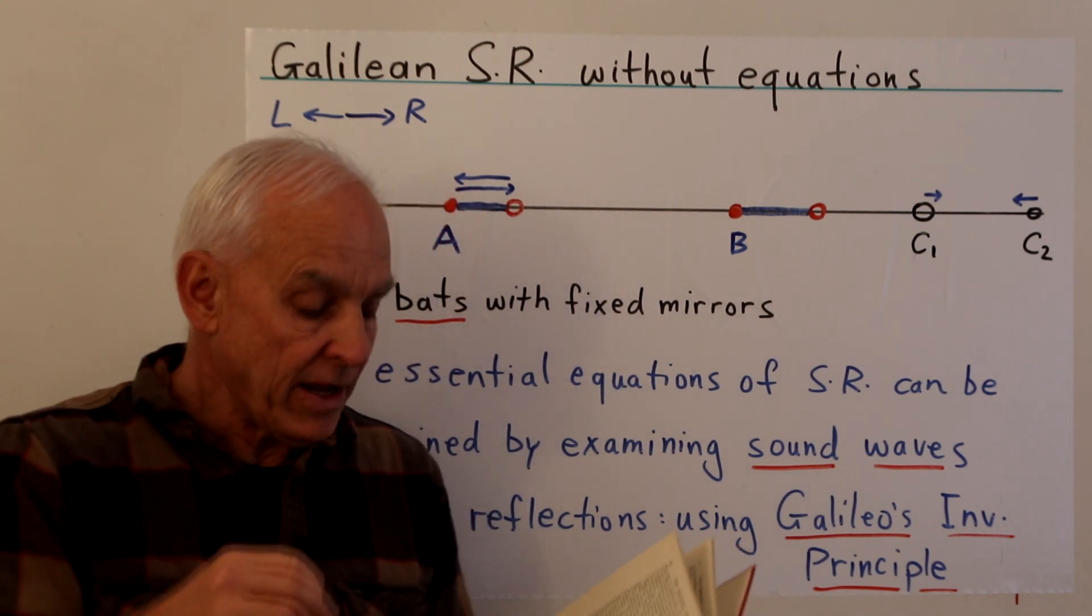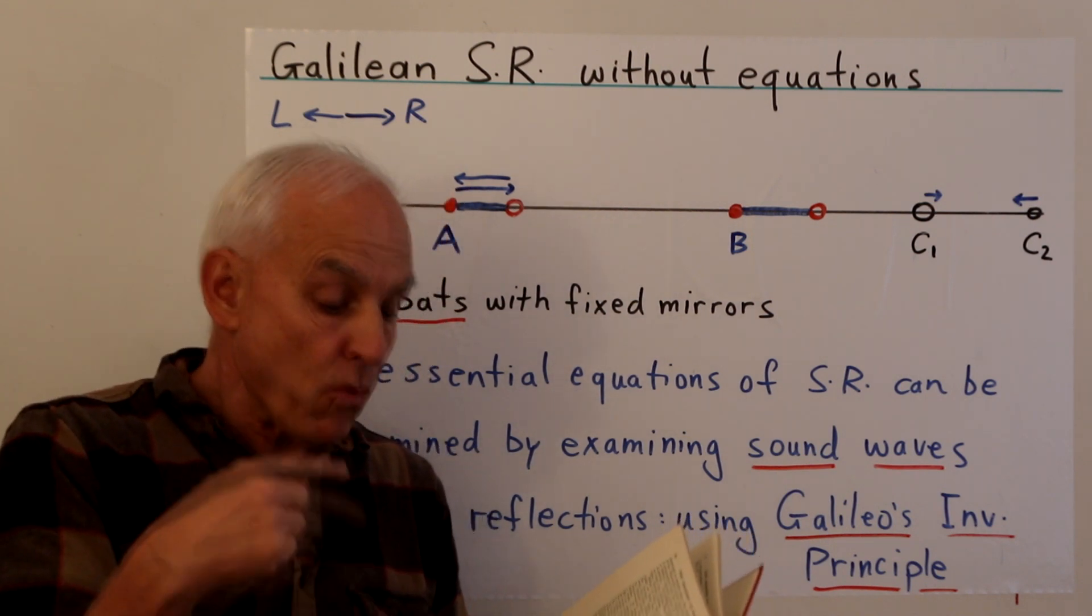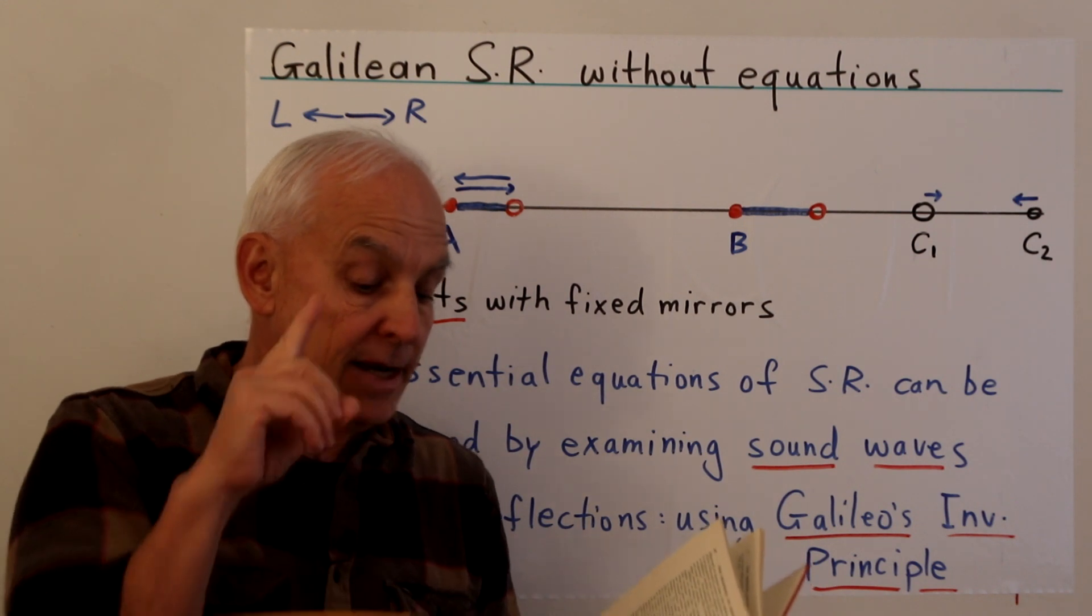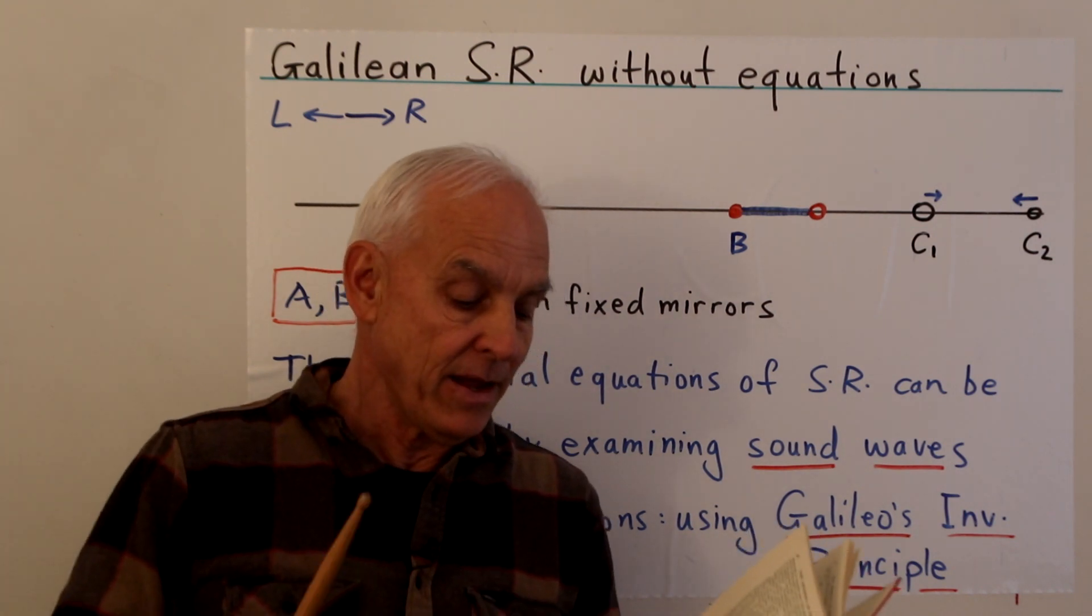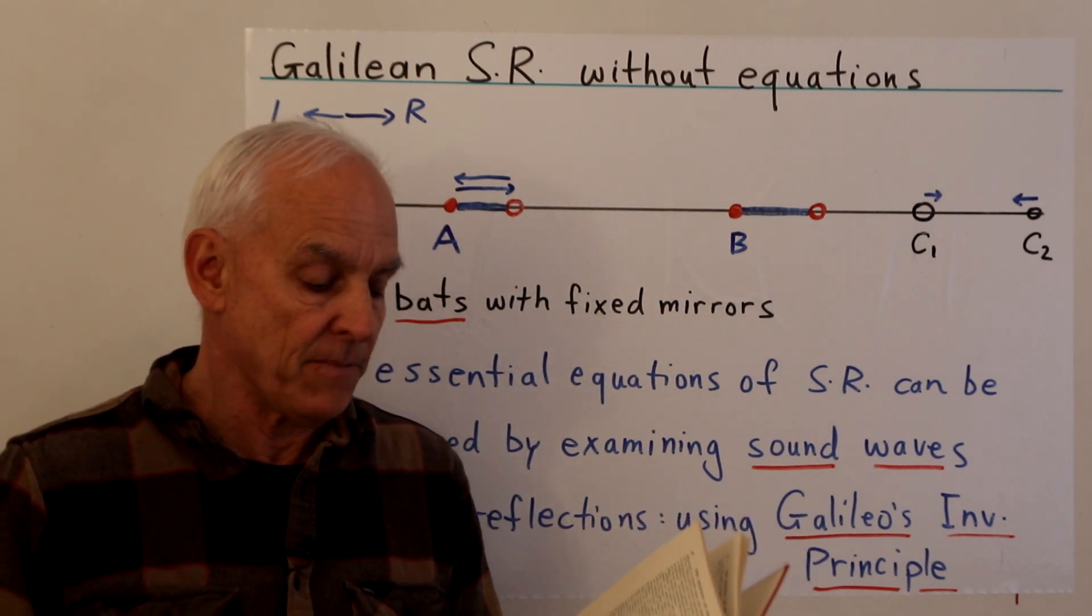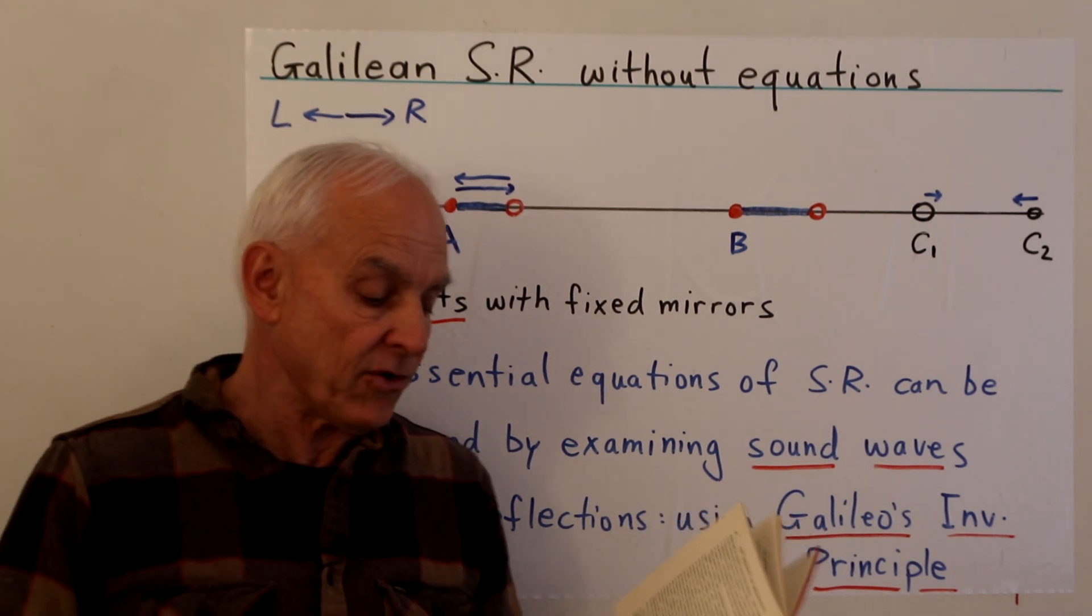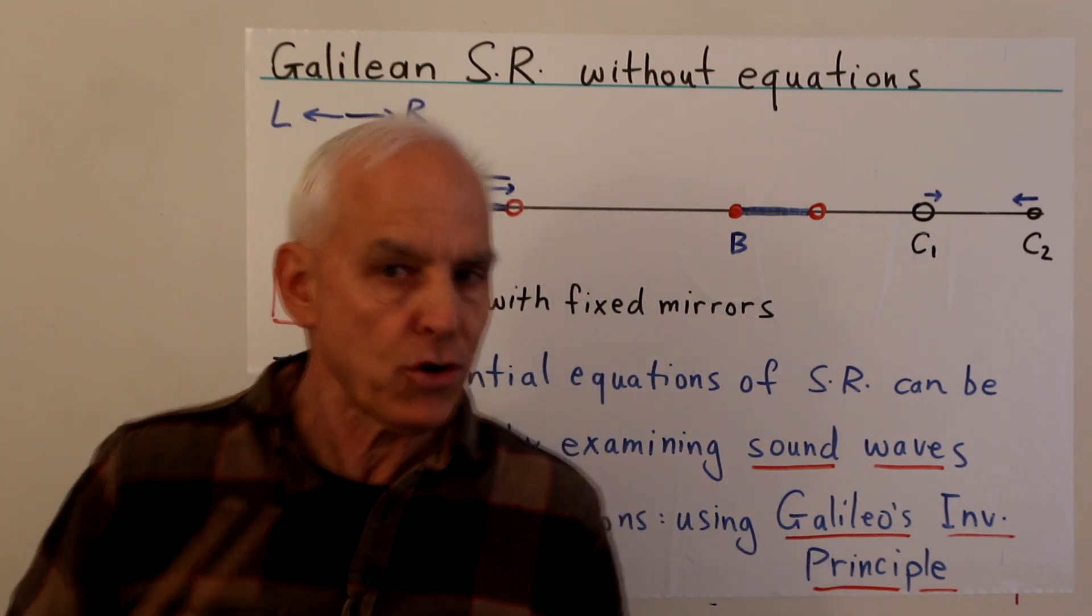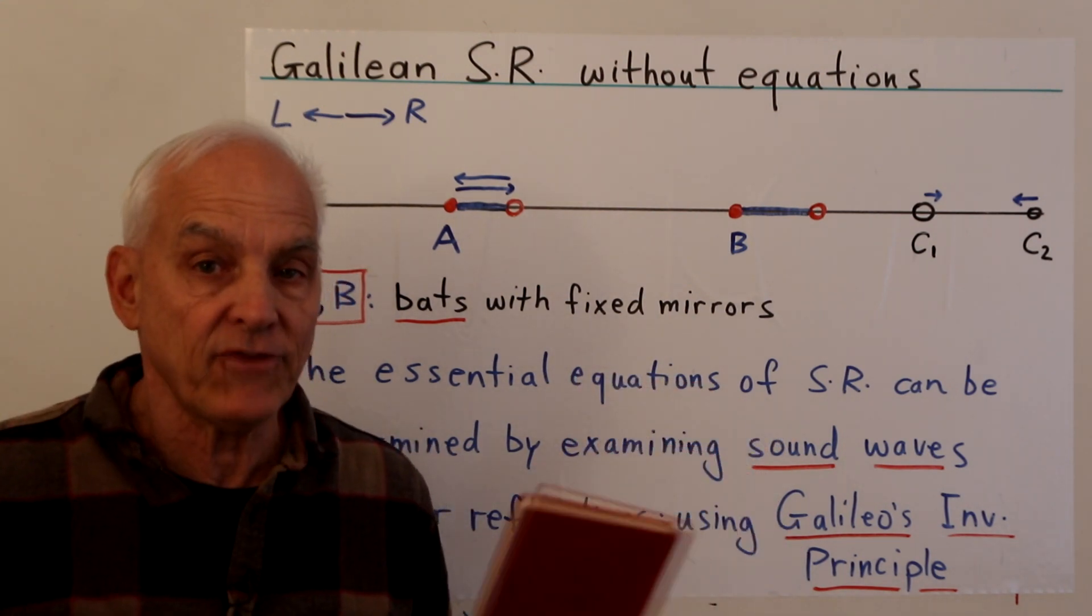'The situation however is somewhat as follows: In order to give physical significance to the concept of time, processes of some kind are required which enable relations to be established between different places. It is immaterial what kind of processes one chooses for such a definition of time. It is advantageous however for the theory to choose only those processes concerning which we know something certain. This holds for the propagation of light in vacuo in a higher degree than for any other process which can be considered, thanks to the investigations of Maxwell and Lorentz.'